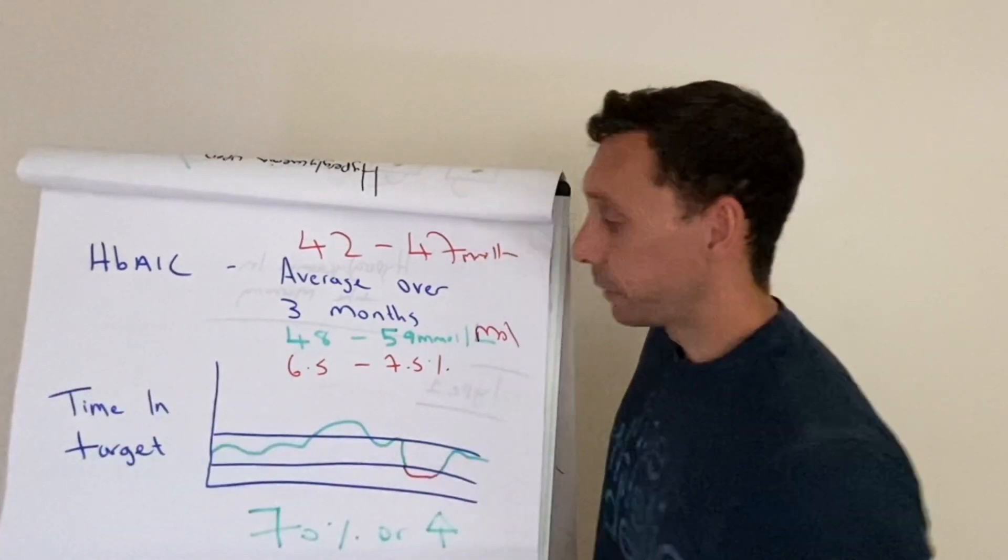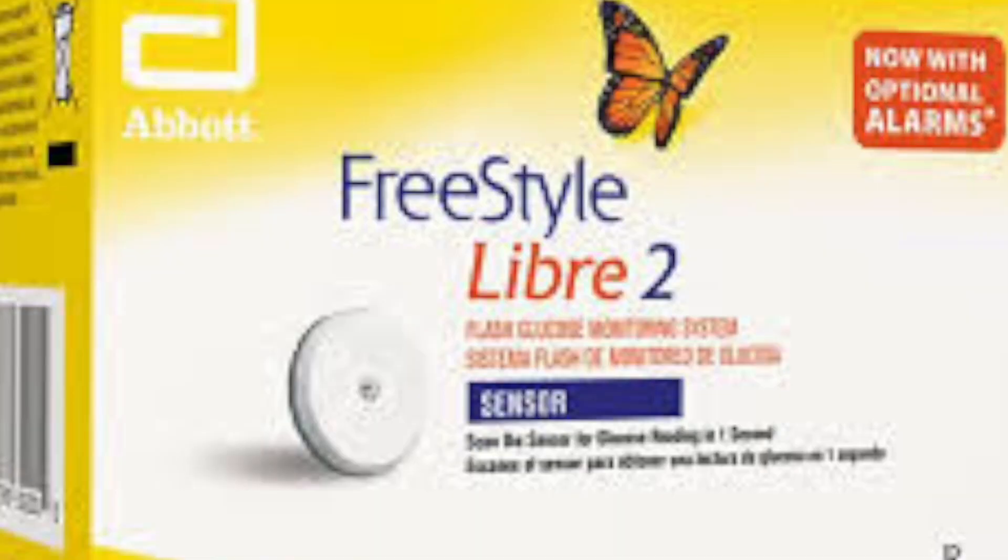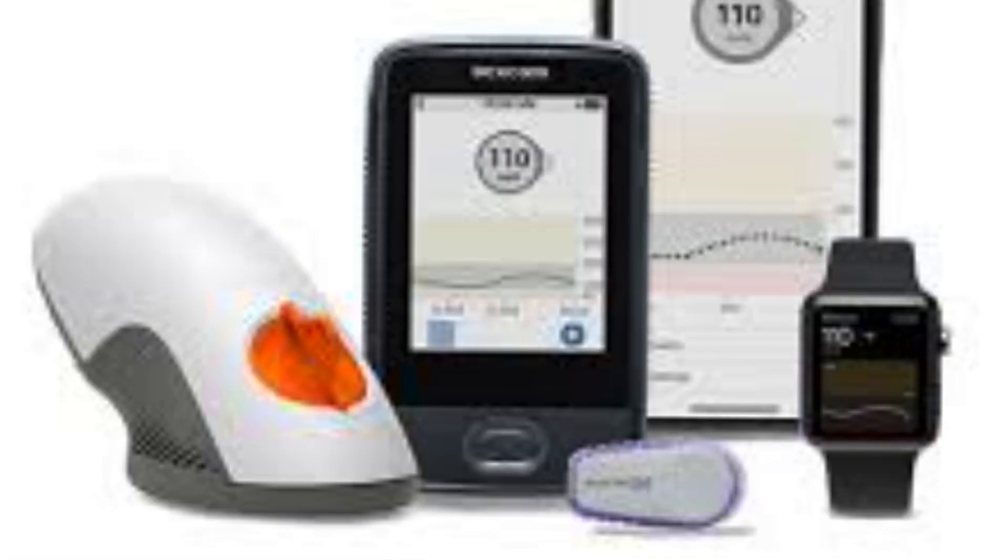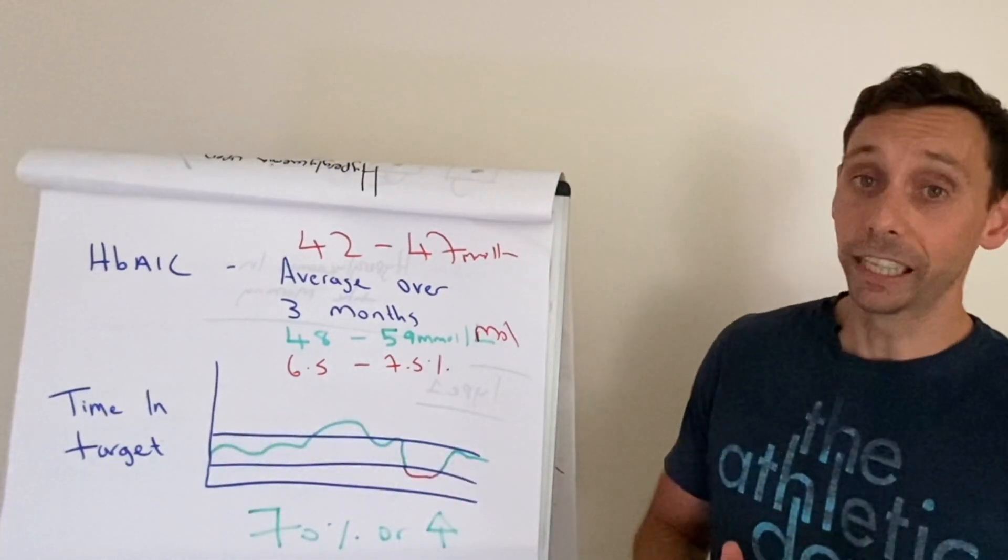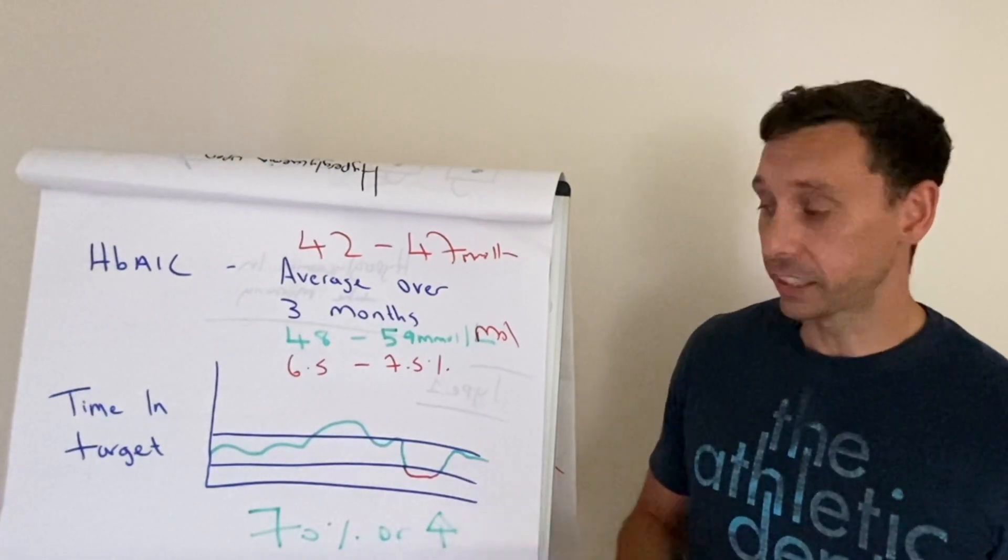Now we have this other one called time in target. This has come about as we've gained access to more technology such as flash glucose sensors like the Freestyle Libre or continuous glucose monitors like the Dexcom. And these have been really valuable because we can then see how the glucose levels have been performing again over reference ranges somewhere between two weeks and 90 days, depending on how you set it.